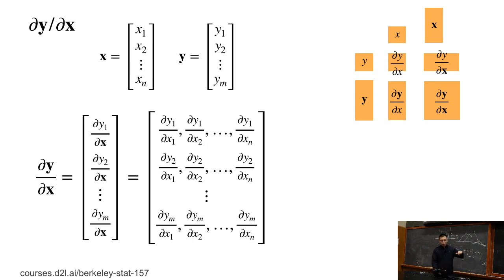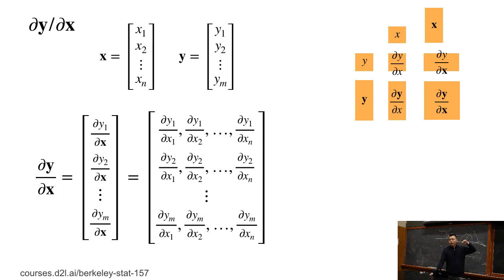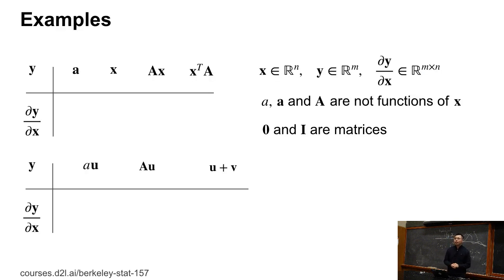Since y is a vector, we get a column vector, meaning each row corresponds to partial yi over partial x. Since partial yi over vector x is a row vector, stacking them gives us a matrix — the Jacobian. Let's go through some examples for a clearer understanding.